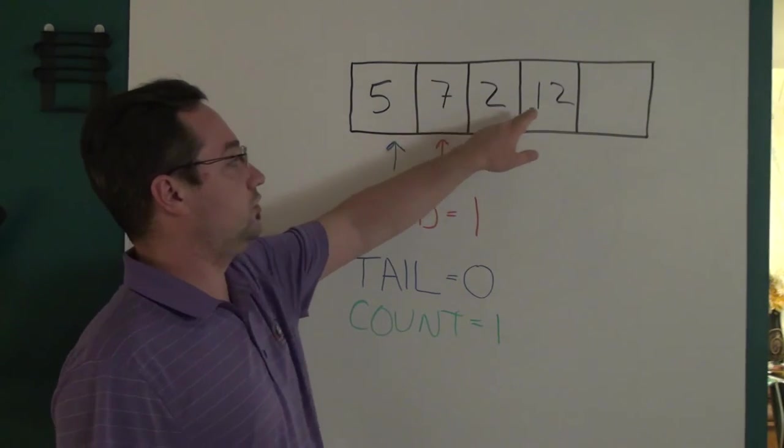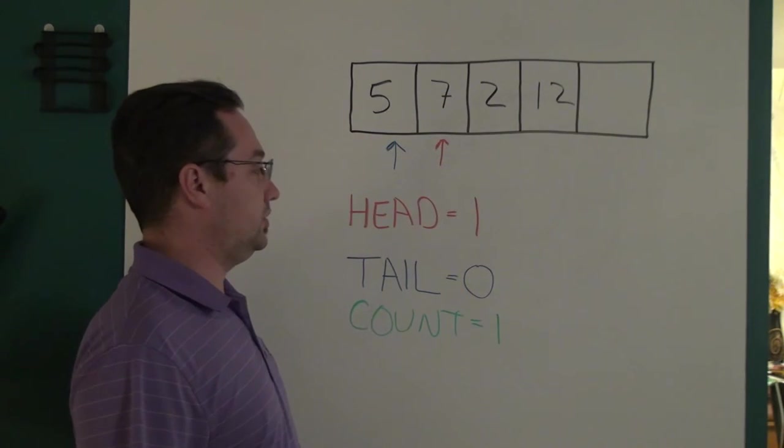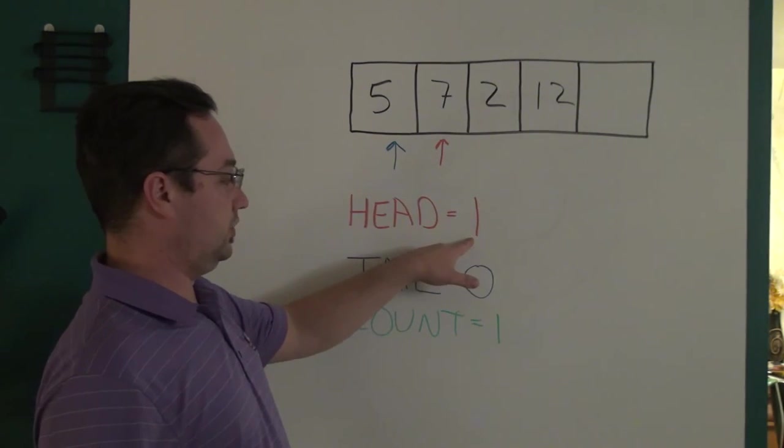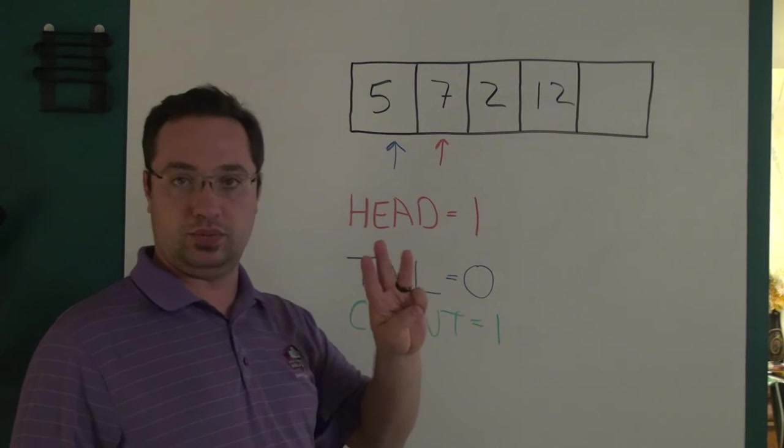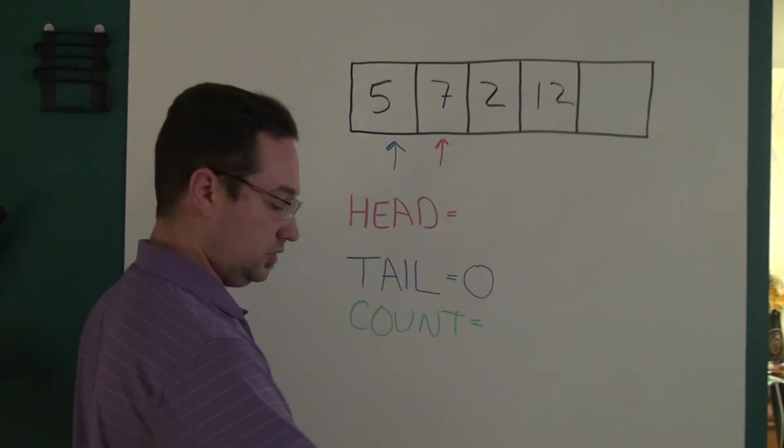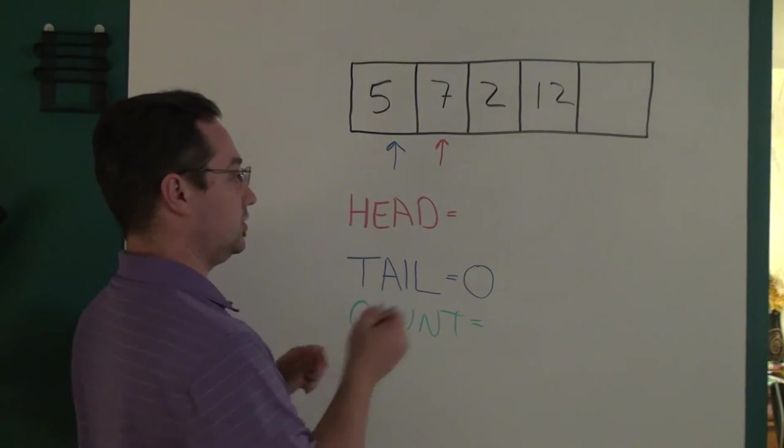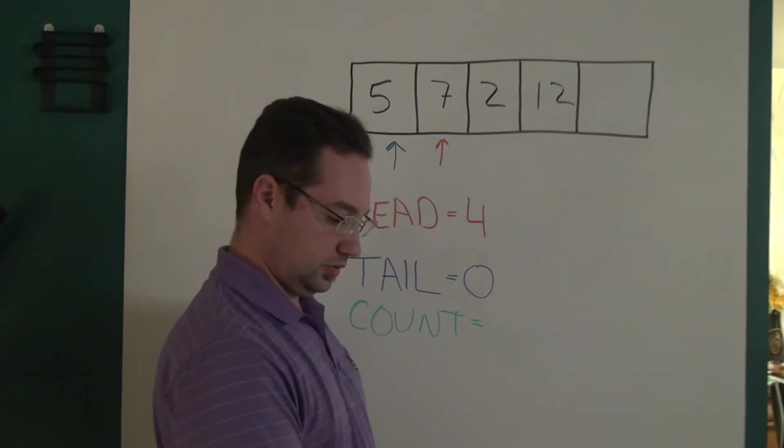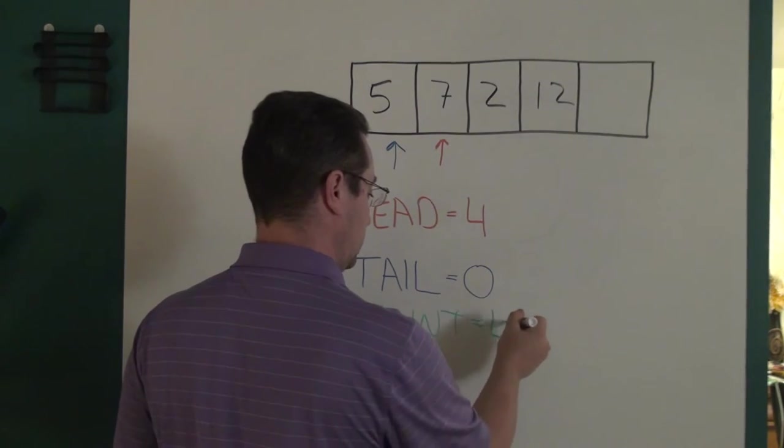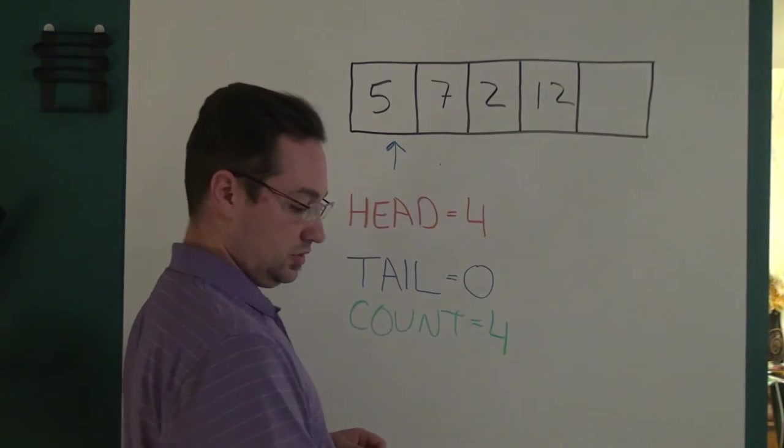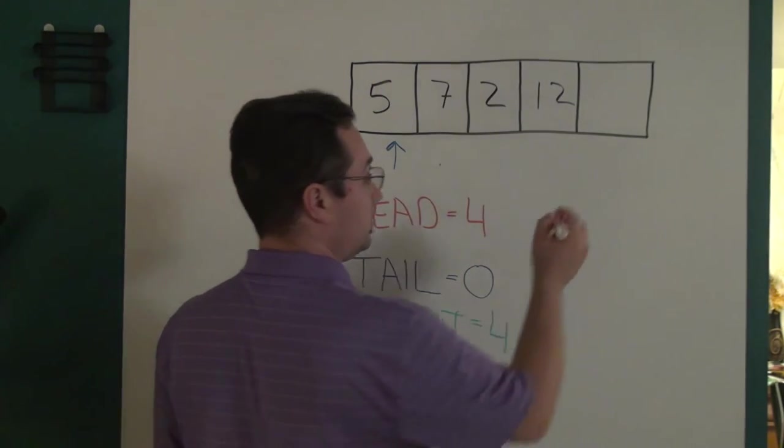So, each time each one of these pieces of data come in, the head gets incremented 1, and count gets incremented 1. Since 1, 2, 3 more pieces of data came in, both the head and the count both go up by 3. So, now this becomes a 4, and this also becomes a 4, and our head is now sitting right here.